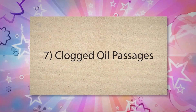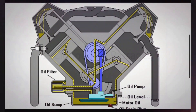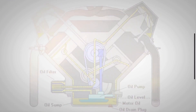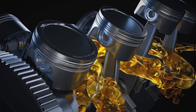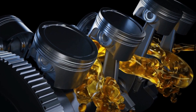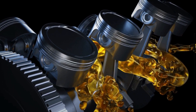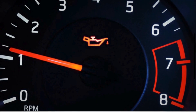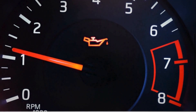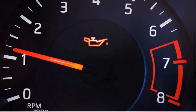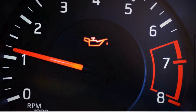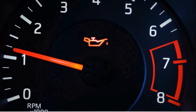7. Clogged oil passages: Oil passages within the engine must be clear to allow oil to flow freely and maintain pressure. If these passages are clogged with debris or sludge, the oil flow is restricted, leading to reduced pressure. This drop in pressure is detected by the oil pressure sensor, which can trigger the PO522 code.